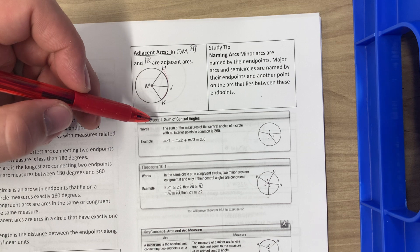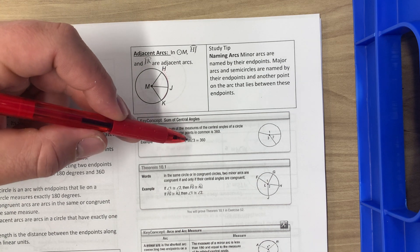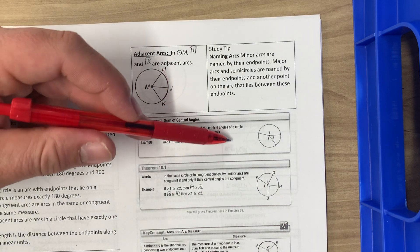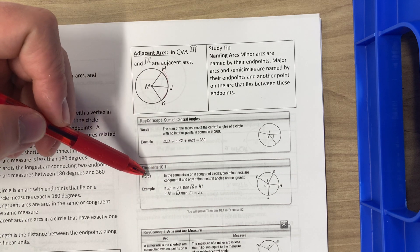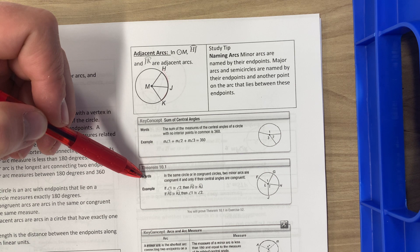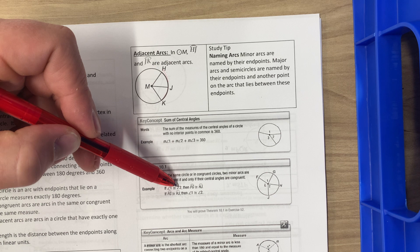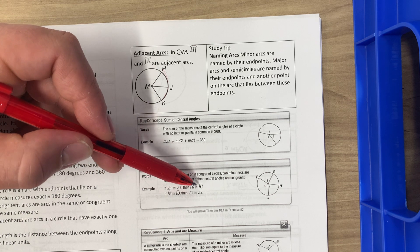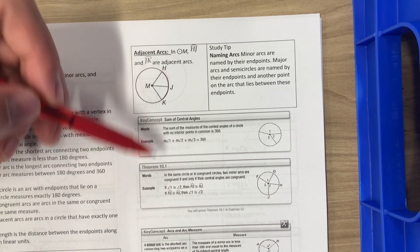The sum of central angles: angle one plus angle two plus angle three would equal 360. And then for the next one, in the same circle or in congruent circles, two minor arcs are congruent if and only if their central angles are congruent. So angle one is congruent to angle two, then arc FG is congruent to arc HJ and vice versa.